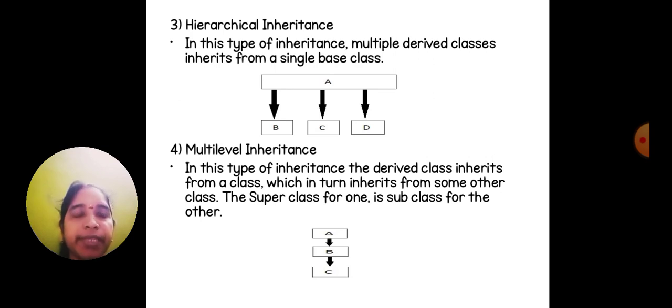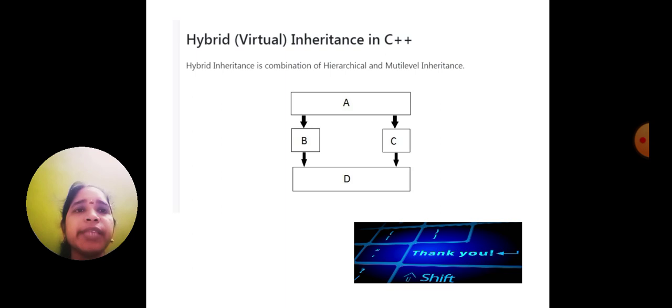Multi-level inheritance: in this type of inheritance, the derived class inherits from a class which in turn inherits from some other class. The superclass for one is subclass for the other. Next one is hybrid inheritance or virtual inheritance in C++. Hybrid inheritance is a combination of hierarchical and multi-level inheritance.